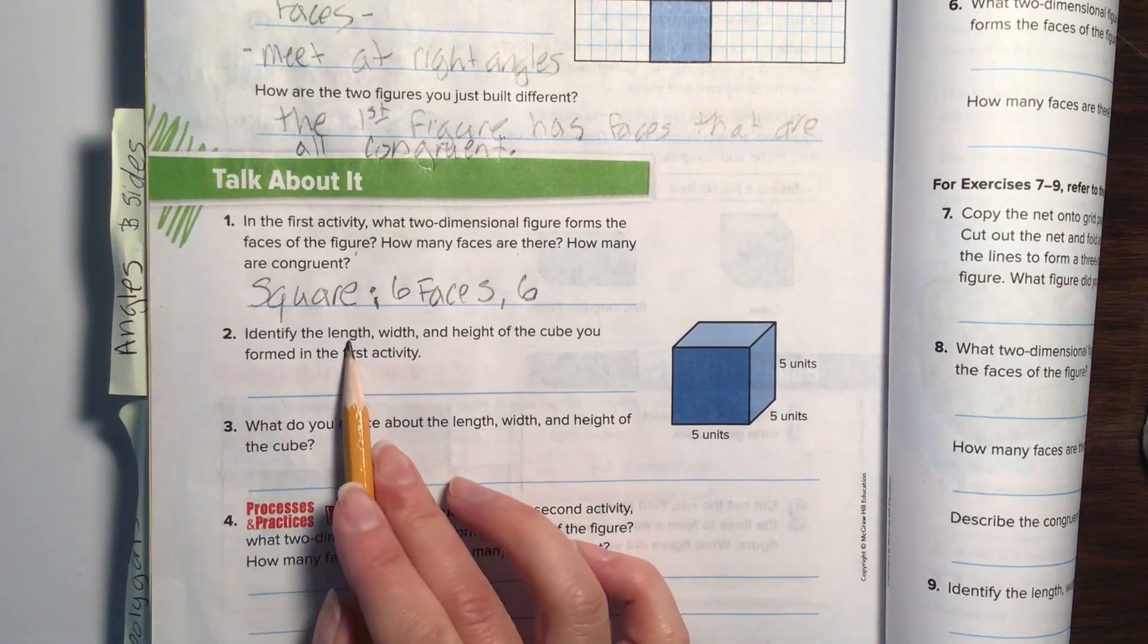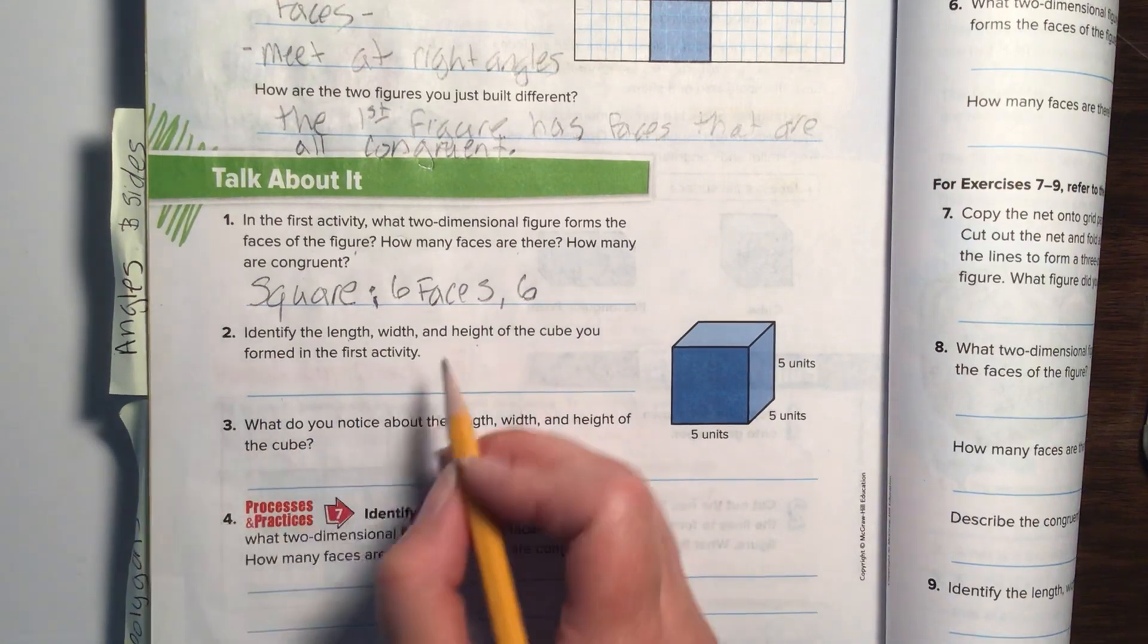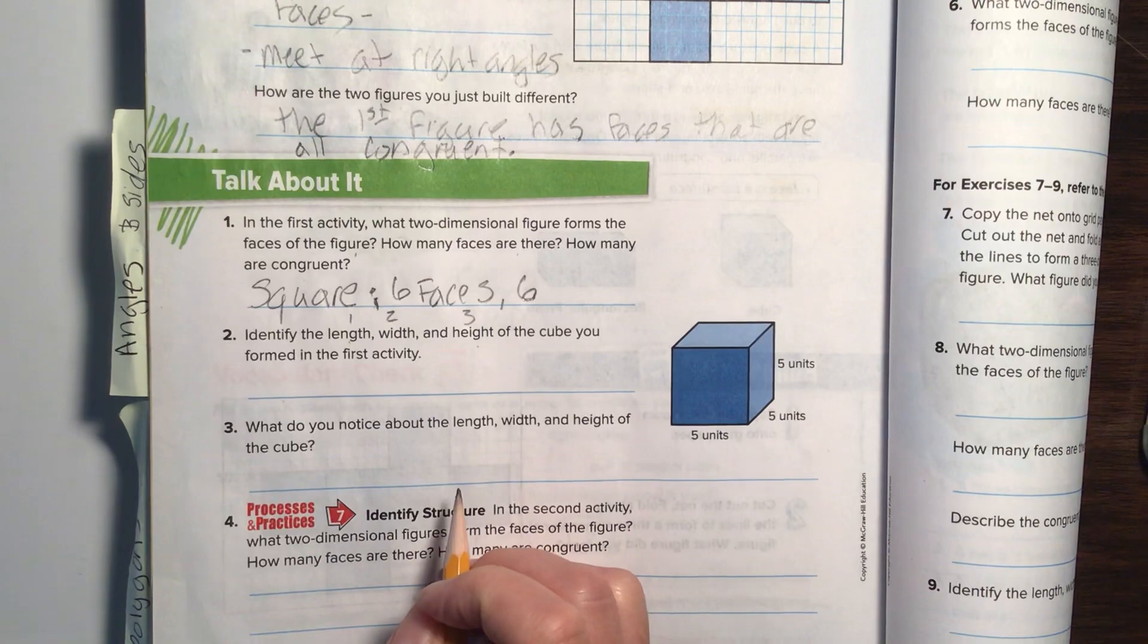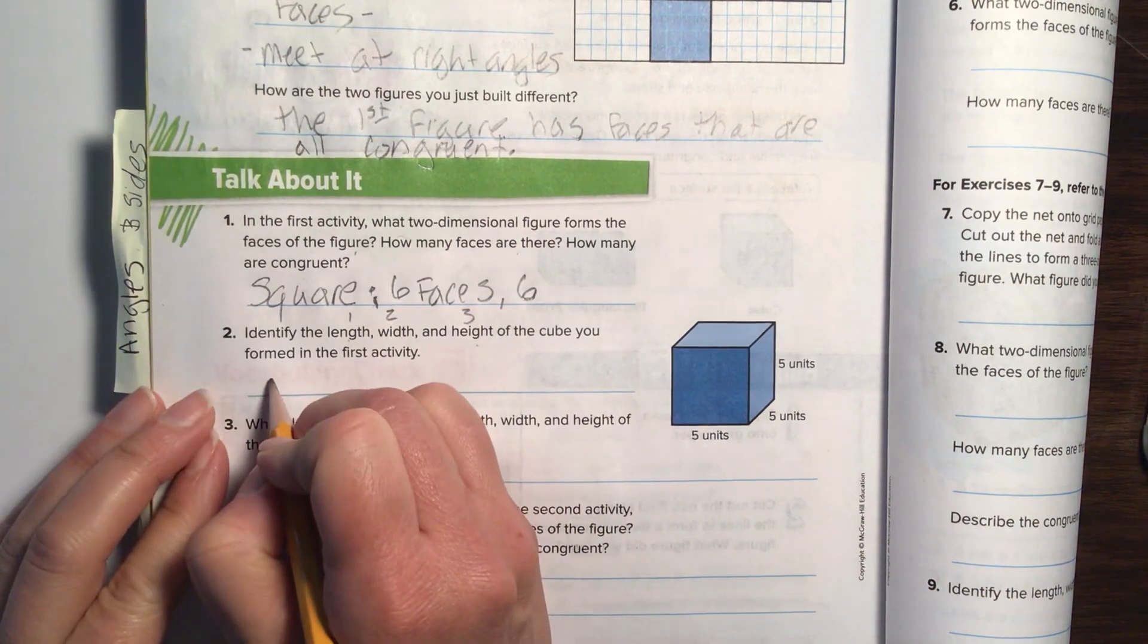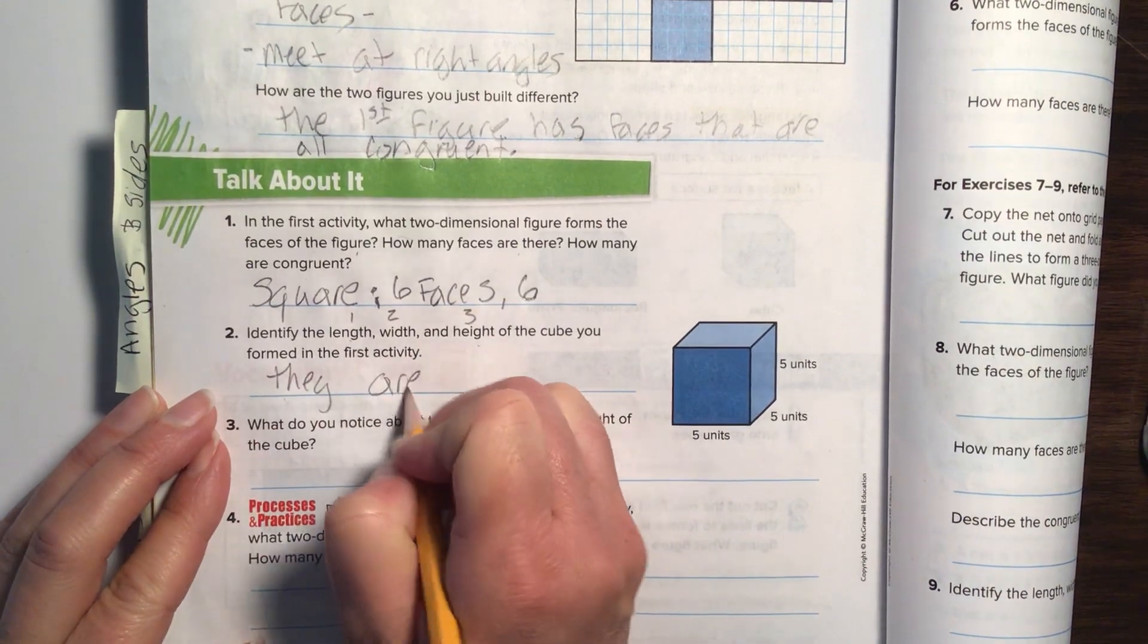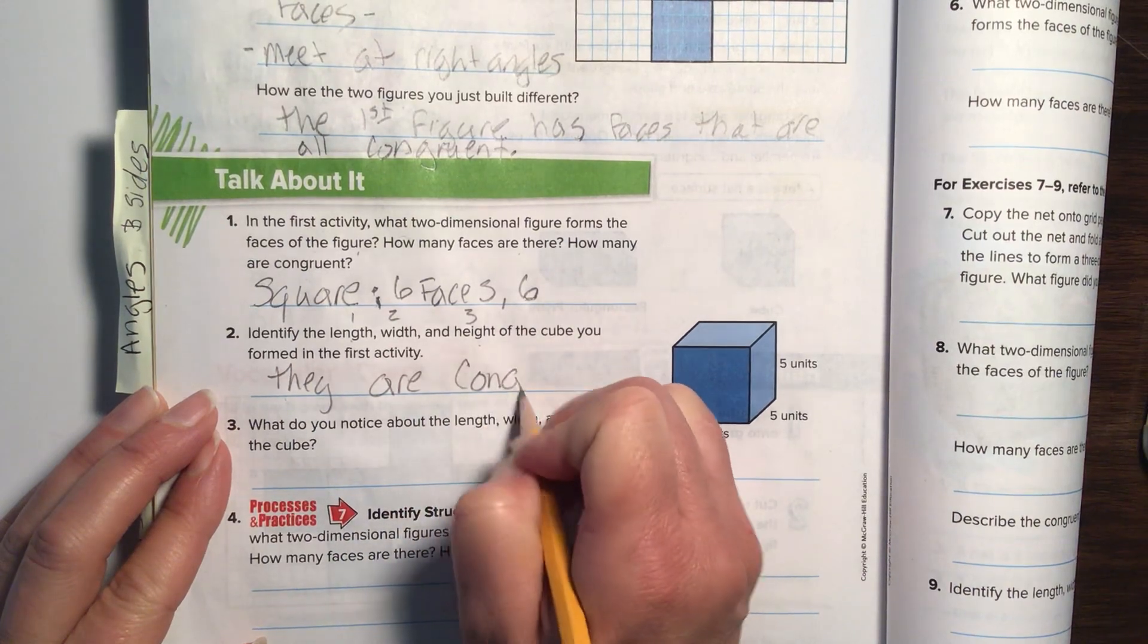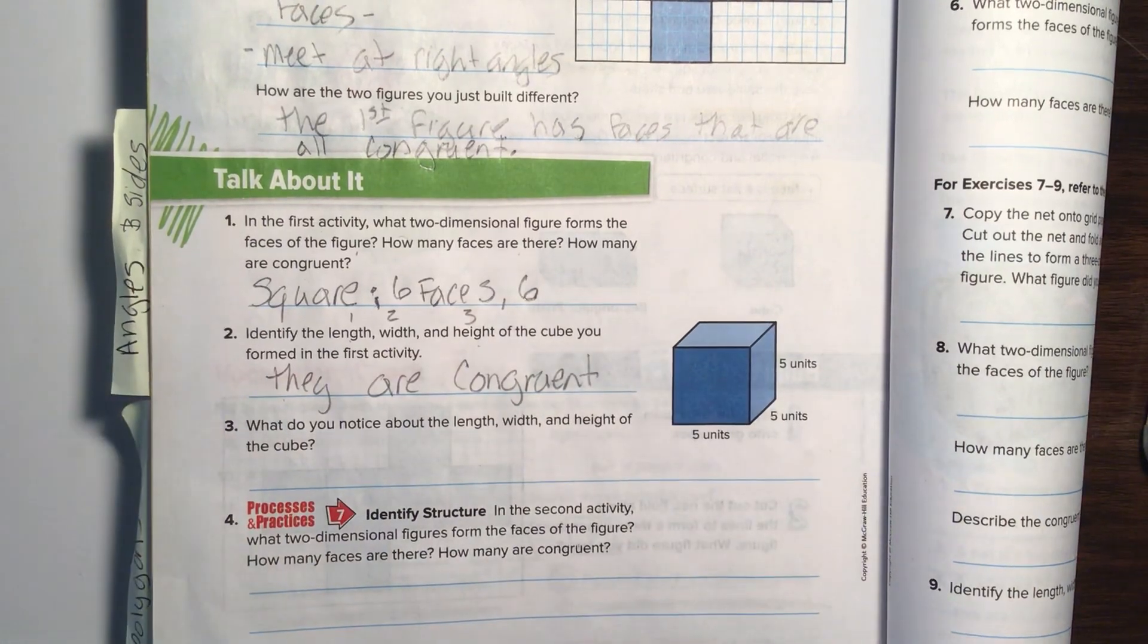Number two, identify the length, width, and height of a cube you first formed in the activity. Well, because they are all congruent, what we can say is that they are congruent. Remember, congruent means same length. It's just a fancy way of saying same length.